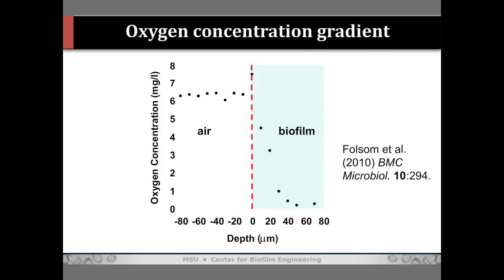Here's a measurement also made with a microelectrode detecting oxygen, showing that within about 50 microns into the biofilm most of the oxygen is gone — a very steep chemical gradient. Bacteria at the top of the biofilm are respiring and consuming oxygen as it diffuses in, creating an oxygen shadow underneath. This helps us understand how a biofilm in an aerated water can harbor strict anaerobes, and how a biofilm is likely to exhibit stratified activity patterns with very different oxygen concentrations.